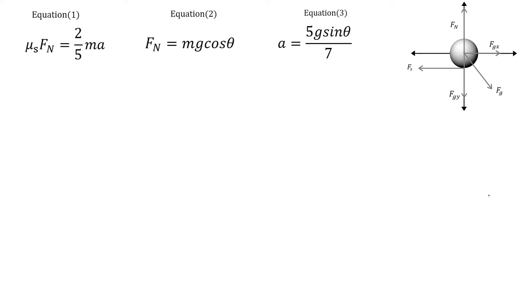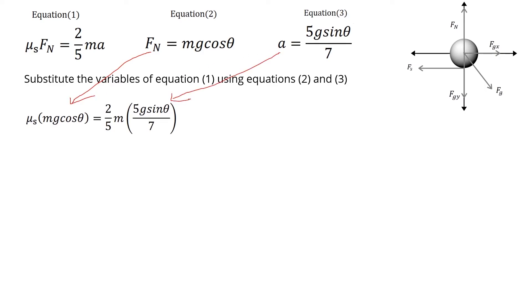Using these three equations, we'll plug in equation two and equation three into equation one. With this we arrive at this situation where F_N is this and a is this. With this, mg cancels out. Dividing both sides by cosine, we will arrive at tangent.